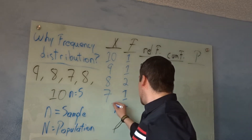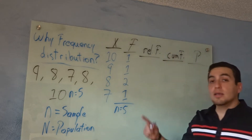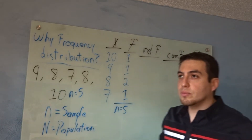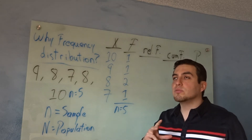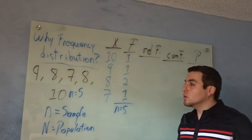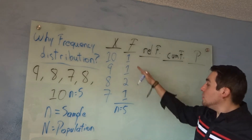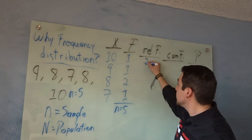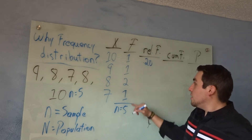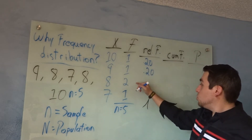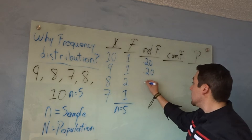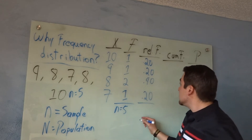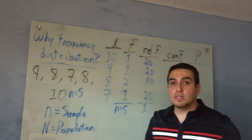This gives us n equals 5. The relative frequency asks how many times did it happen divided by all the numbers available — expressed as a decimal. 10 happened once out of five numbers, so 1 divided by 5 equals 0.20. Same for 9: 0.20. Eight happened twice, so 2 divided by 5 equals 0.40. Seven gives 0.20. If you add all of these up they should equal 1. Notice how it's looking much more organized.